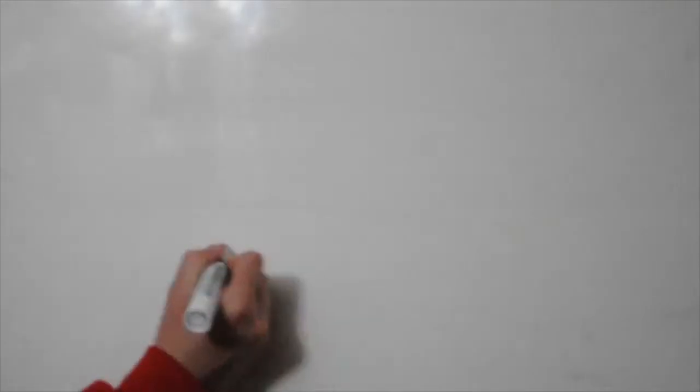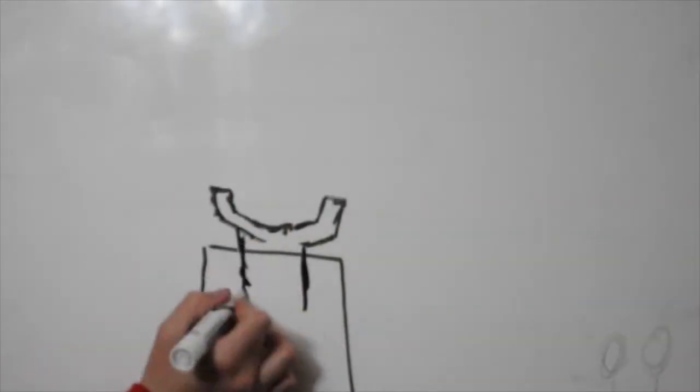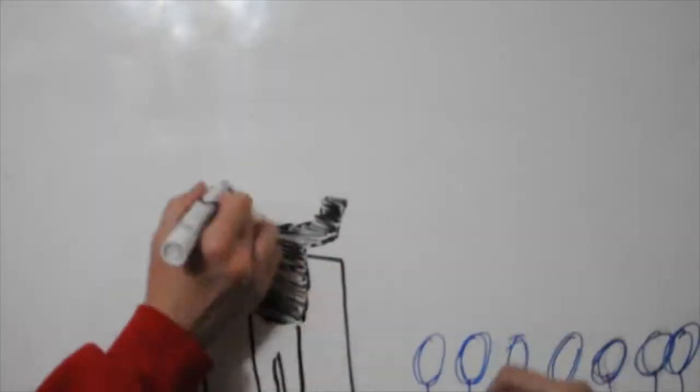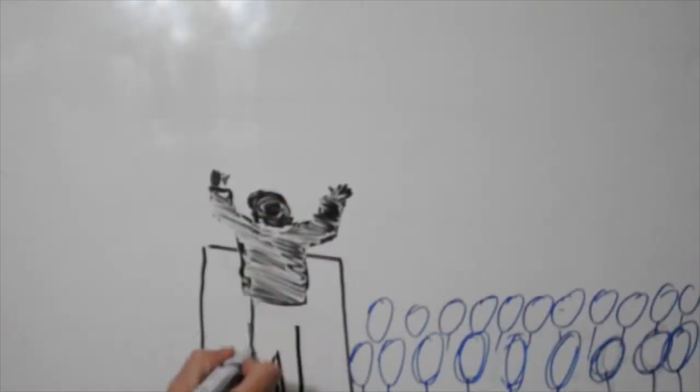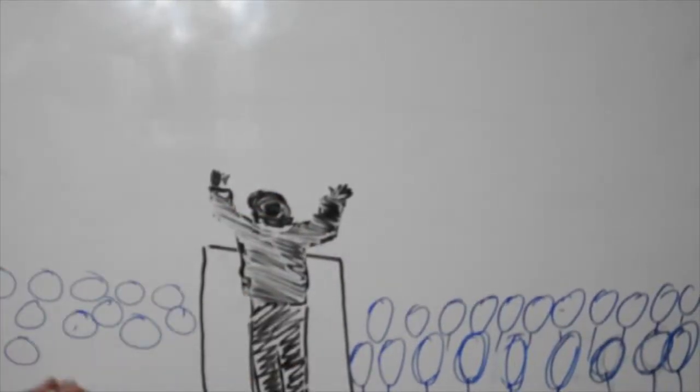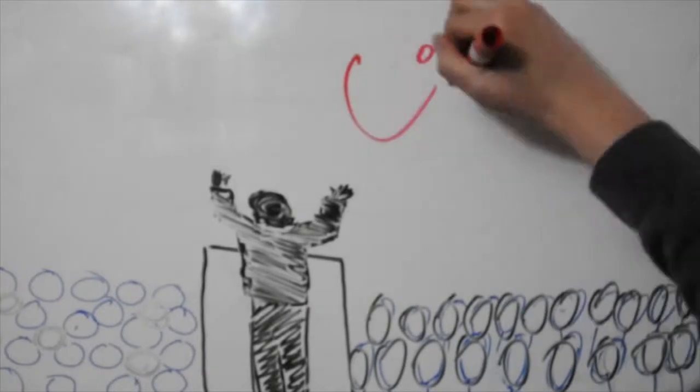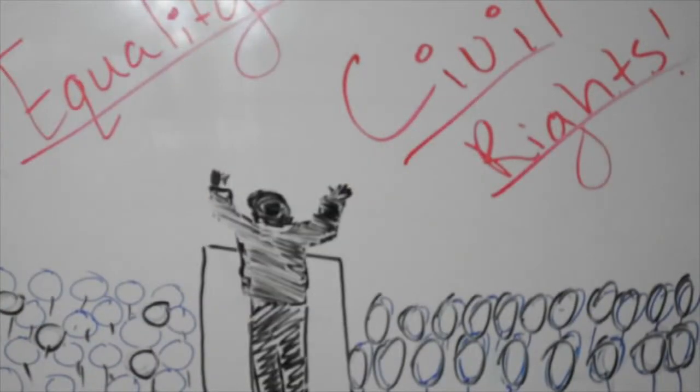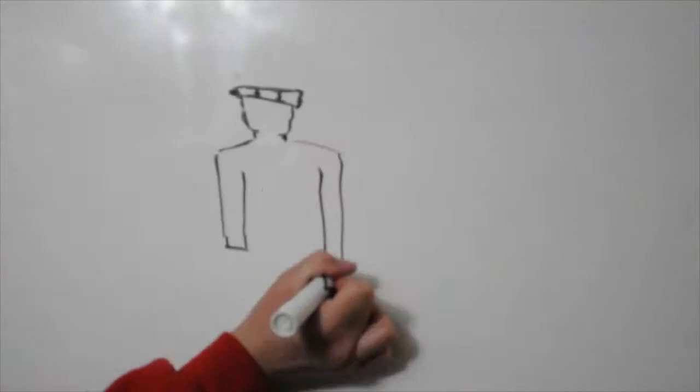On August 28, 1963, over 200,000 people representing a number of civil rights groups gathered at the Lincoln Memorial for what was known as the March on Washington for Jobs and Freedom. Approximately 30,000 soldiers, police officers, and members of the National Guard were called into the surrounding area to manage and monitor the crowd.